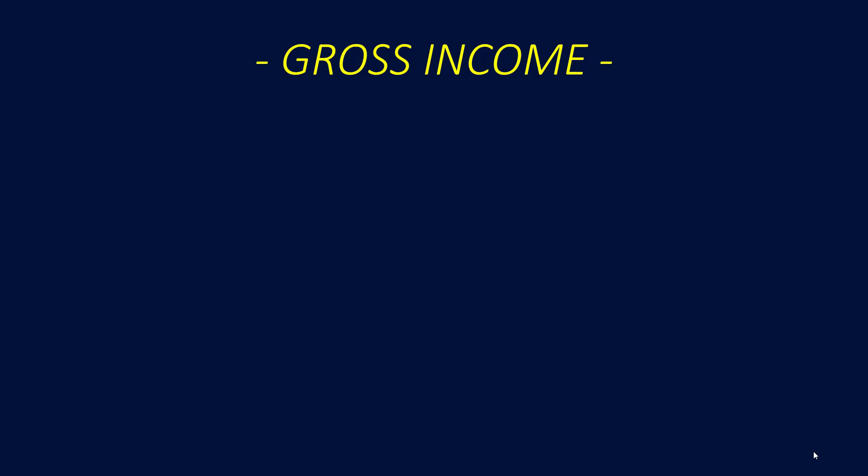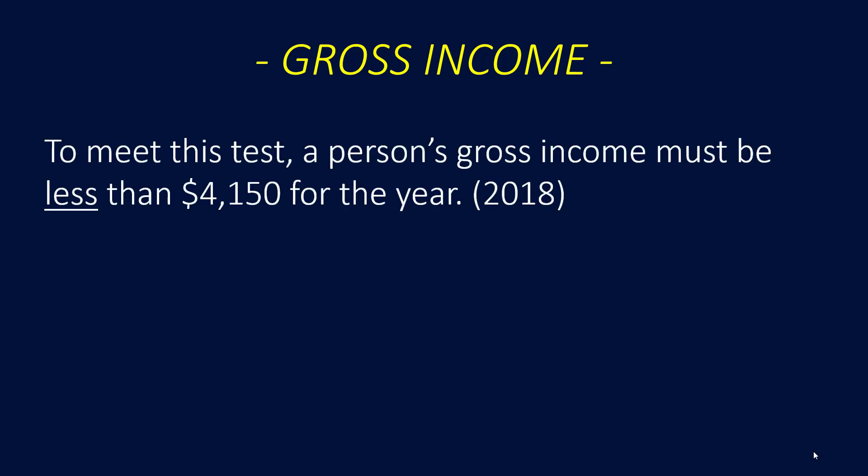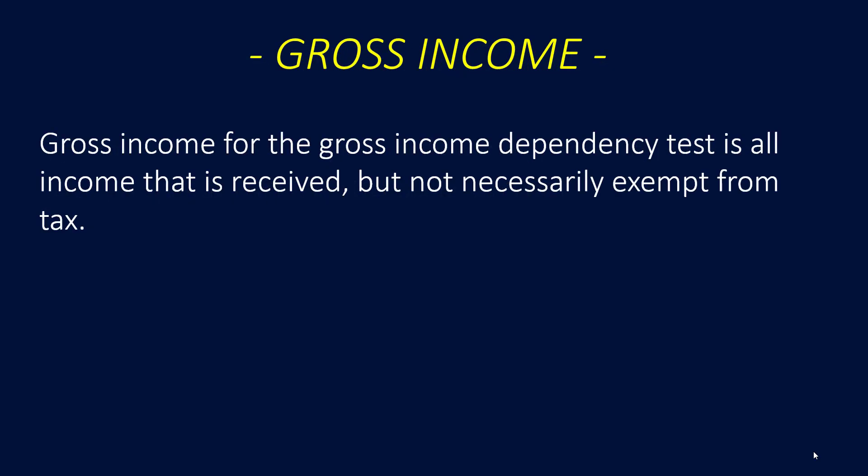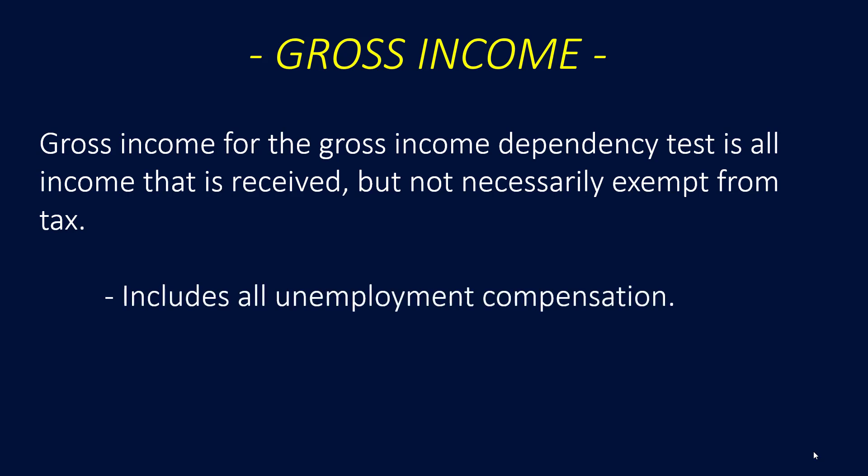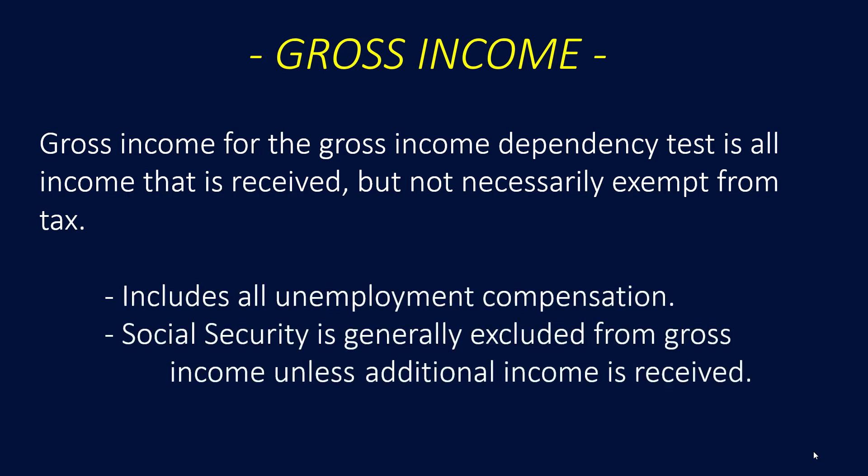Next, the gross income test for a qualifying relative. To meet this test, a person's gross income must be less than $4,150 for tax year 2018. The gross income for the dependency test is all income that is received but not necessarily exempt from tax. This includes all unemployment compensation. Social Security is generally excluded from gross income unless additional income is earned or received.